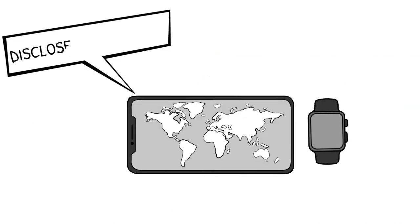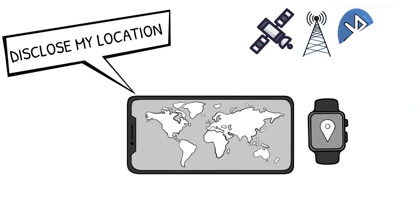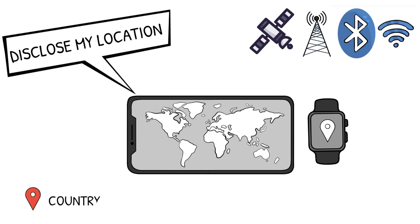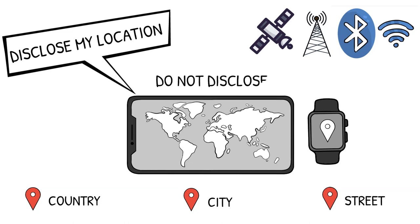Here is an example of location privacy. Most devices nowadays are equipped with GPS receivers or other sensors that allow calculating the position of the device. However, different applications require various levels of location accuracy, so the user can decide on the granularity of location information as well as whether to disclose the coordinates at all.